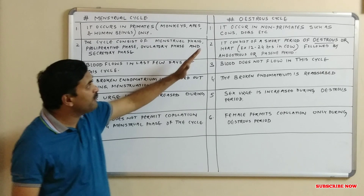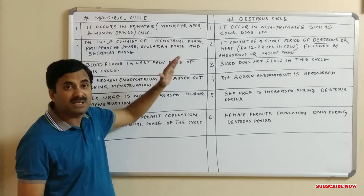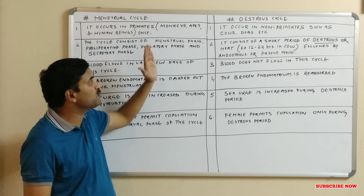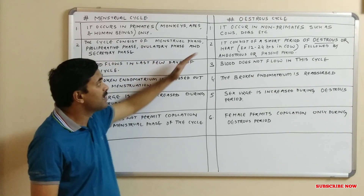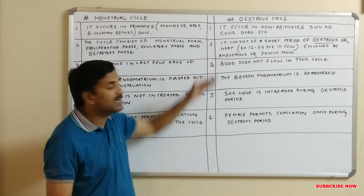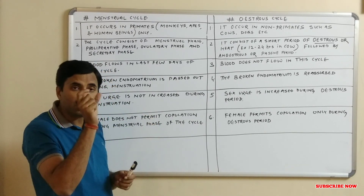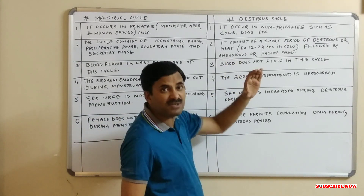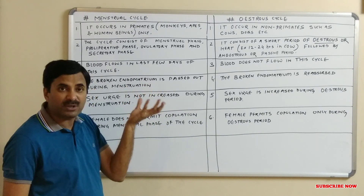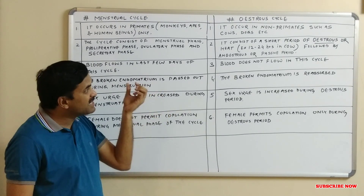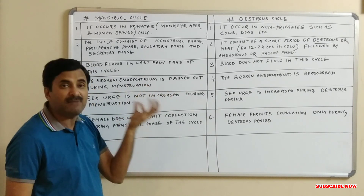The estrous cycle, in contrast, is very short compared to the menstrual cycle. The short period of the estrous cycle is called the estrous period or the heat period, and it varies from organism to organism. In the case of the cow, this heat period is 12 to 24 hours, during which the cow attracts the male for copulation.